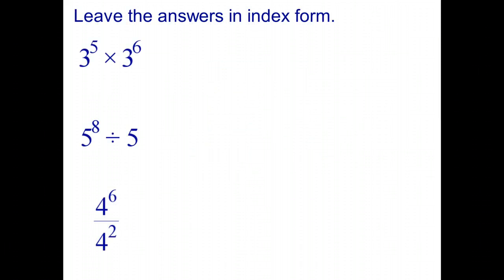First question is 3 to the power of 5 multiplied by 3 to the power of 6. And the index law for multiplying powers with the same base is to add the indices. That becomes 3 to the power of 11. So we don't multiply, we add.